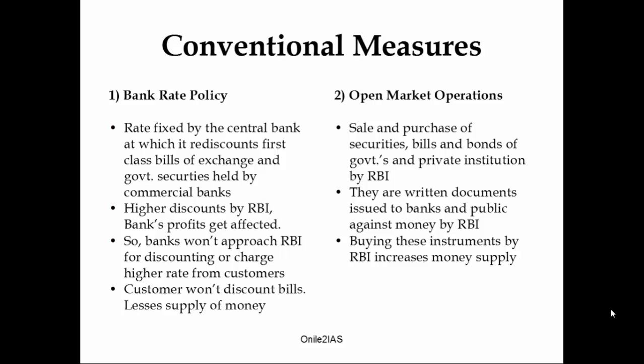Banks normally approach RBI to get the bills rediscounted. RBI charges a percentage of discount and gives money to the banks — say 6%, so banks get 940 rupees, making a profit of 20 rupees. To control inflation, RBI increases the rate of rediscounting, which discourages banks from approaching them to get bills rediscounted. This reduces the money supply for lending. Commercial banks also increase their discount rate to consumers, discouraging customers from discounting bills, leading to lesser supply of money in the market.